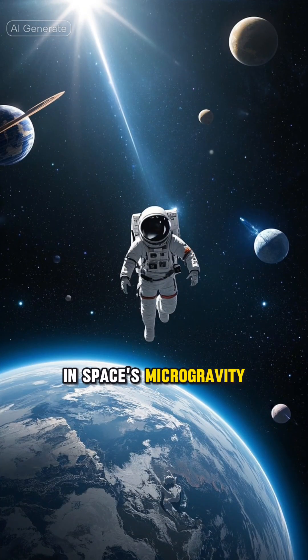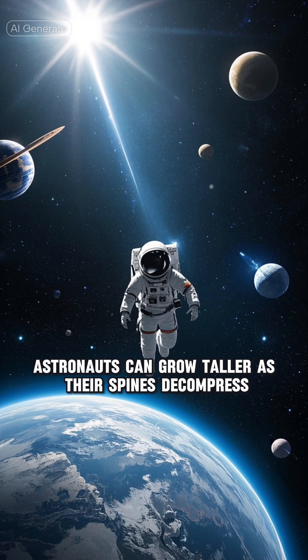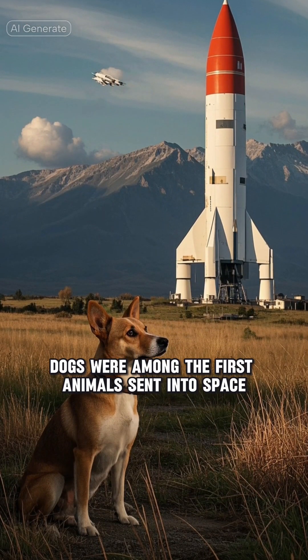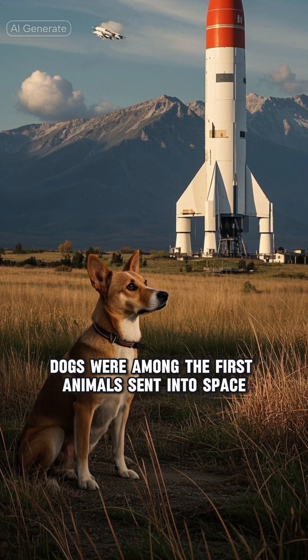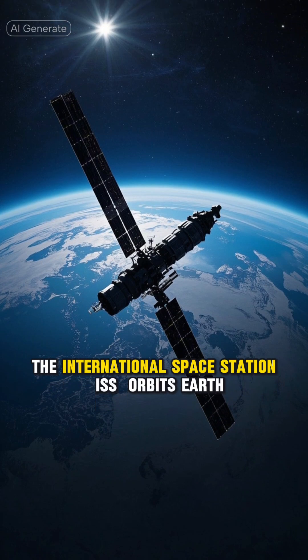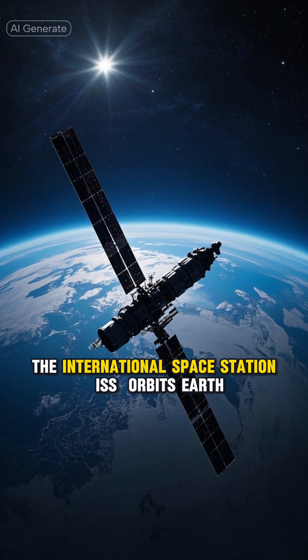In space's microgravity, astronauts can grow taller as their spines decompress. Historically, dogs were among the first animals sent into space. The International Space Station orbits Earth every 90 minutes.